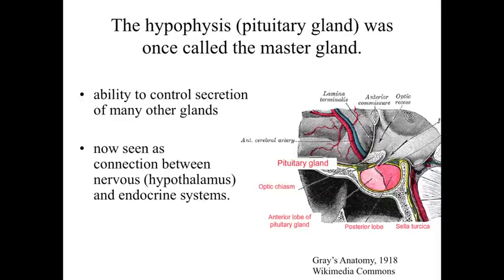It's seen as a connection between the nervous system, and the pituitary gland is essentially a structure that's located immediately below the hypothalamus of the brain. The pituitary is seen as a connection between the nervous system and the endocrine systems within the body.